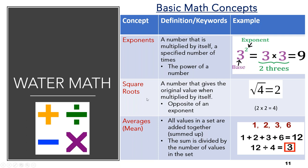The second concept is the square root — the number that gives you the original value when multiplied by itself. It is the opposite of an exponent. For example, the square root of four gives you two, because two multiplied by itself equals four. Square roots are the opposite of exponents.